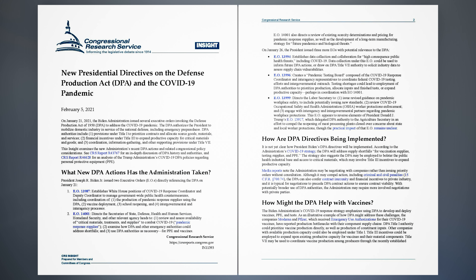EO 13,987 establishes White House positions of COVID-19 response coordinator and deputy coordinator to manage government-wide public health countermeasures, including coordination of: 1. The production of pandemic response supplies using the DPA; 2. Vaccine deployment; 3. School reopening; and 4. Intergovernmental and interagency processes.